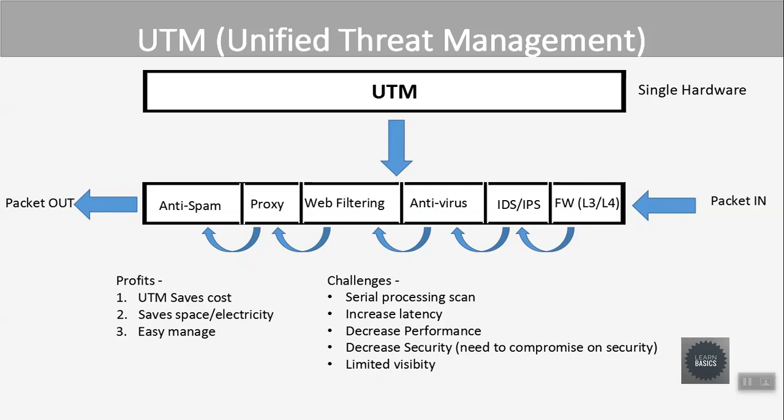As serial processing and latency increase, we get limited visibility. If some engines are not updated, new threats can pass through — IDS/IPS only checks known signatures and may bypass newer threats. Additionally, both stateful firewall and UTM work on OSI Layer 3 and Layer 4, based only on port and protocol.